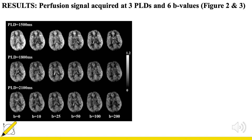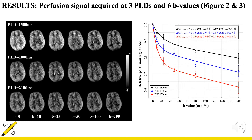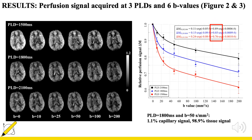Here are the perfusion images acquired with Picasso at 3 delay times and 6 diffusion weightings. The plot shows average perfusion signal with increasing diffusion weightings, with signal from each post-labeling delay indicated by a different color. For each curve, we apply a two-compartment fitting to separate the vascular and tissue compartments. As expected, the tissue fraction increases with longer PLD. Due to the 100-fold difference in diffusion coefficients, the two compartments can be separated with a small diffusion gradient — for example, at B=50, the perfusion signal contains only 1% capillary signal and 99% tissue signal.